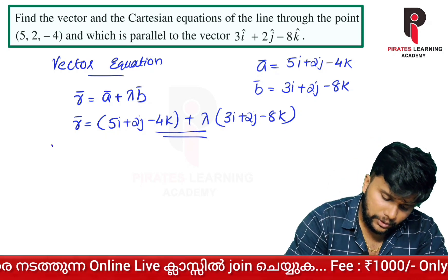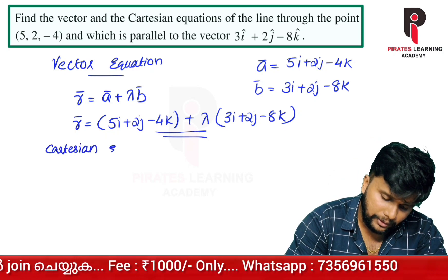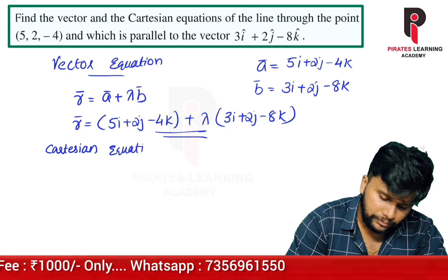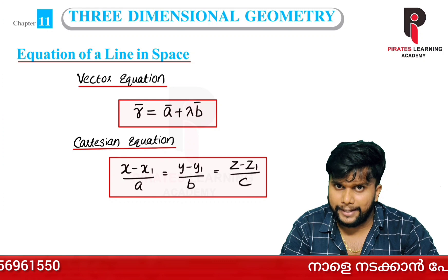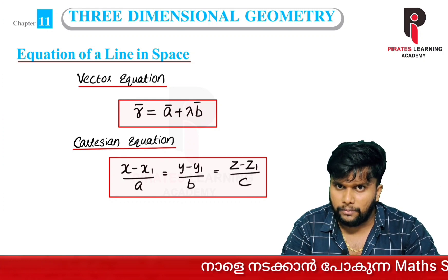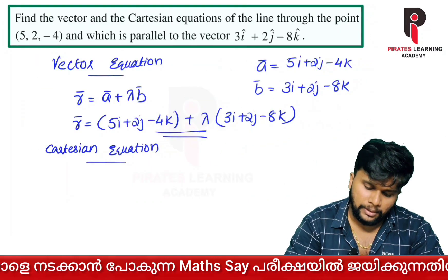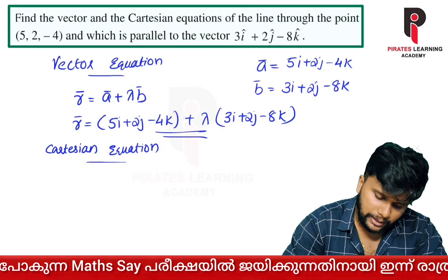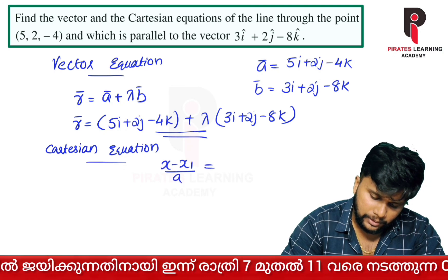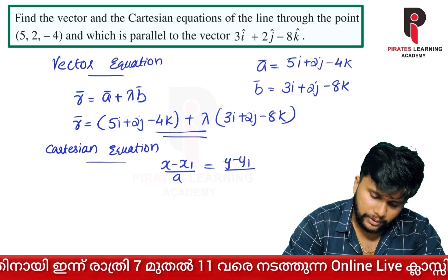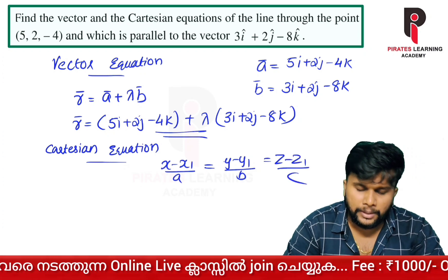Now the Cartesian equation. The Cartesian equation is x minus x1 by a, equal to y minus y1 by b, equal to z minus z1 by c.